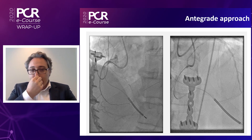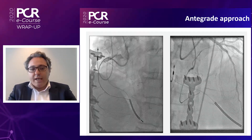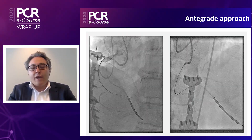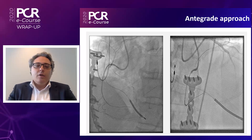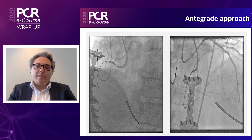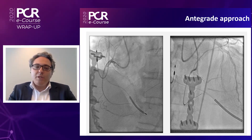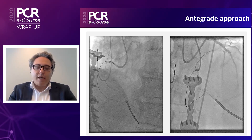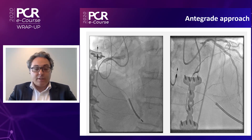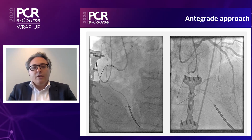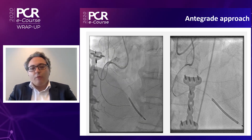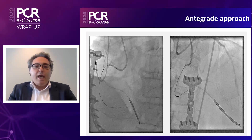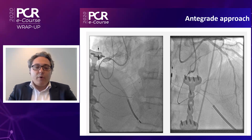We then started an anterograde approach. But as you can see in the right panel, there is already a dissection — the wire went into the sub-intimal space and we were already jeopardizing the bifurcation in the distal right. So we decided to stop this anterograde approach and use another way.